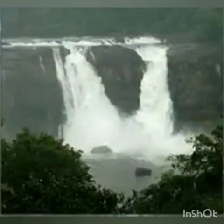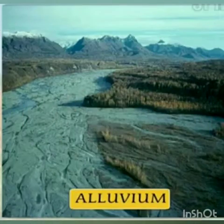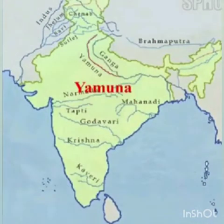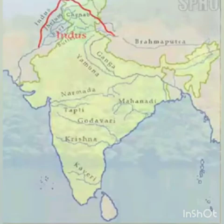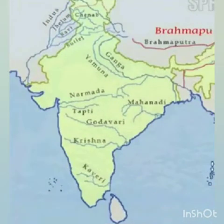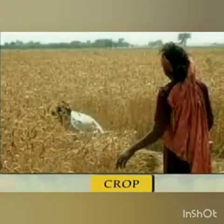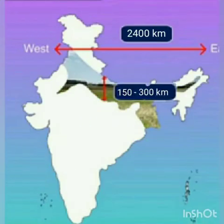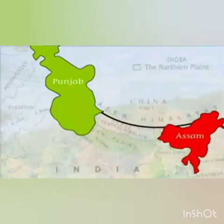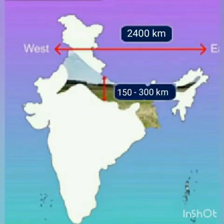The abundant water and rich silt brought down by the Himalayan rivers — Ganga, Yamuna, Indus, Brahmaputra and their tributaries — make these plains very fertile. These plains are flat and even, stretching up to 2,400 km from west to east and with a width of 150 to 300 km.